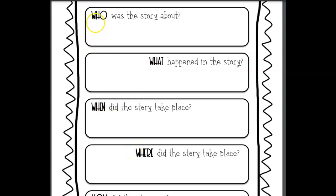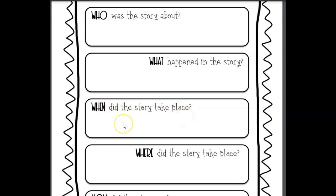The first W is 'who.' Who was the story about? Who were the main characters in the story? The next W is 'what.' What happened in the story? Tell the events of the story. Then 'when' — when did the story take place? Was it a long time ago? Was it in the morning? Was it in present times?